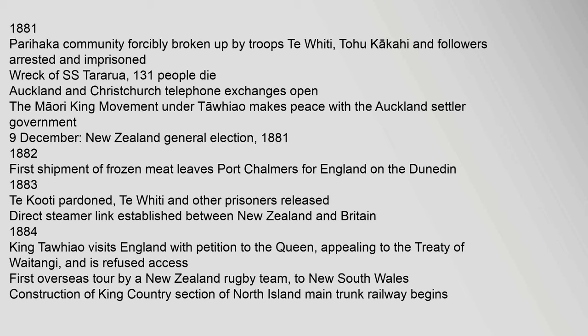9 December: New Zealand general election. 1881–1882: First shipment of frozen meat leaves Port Chalmers for England on the Dunedin. 1883: Te Kooti pardoned; Te Whiti and other prisoners released. Direct steamer link established between New Zealand and Britain. 1884: King Te Tawhiao visits England with petition to the Queen, appealing to the Treaty of Waitangi, and is refused access.